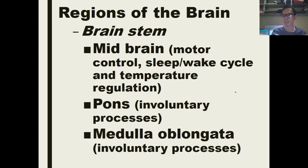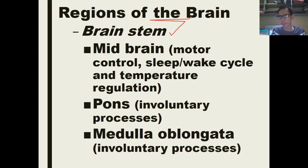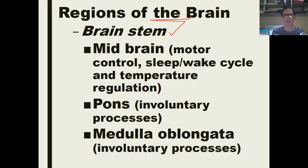We also have the brain stem, which is made up of the midbrain — controlling motor function, sleep-wake cycle, temperature regulation, and reflex. In the brain stem, there is also what they call the pons, which mostly controls all the involuntary processes in our body such as breathing. Along with the medulla oblongata, these parts control involuntary processes like heartbeat, breathing, digestion, and urination.